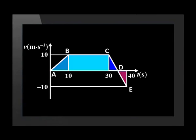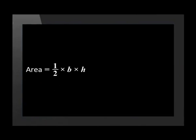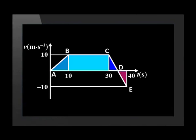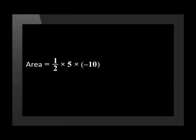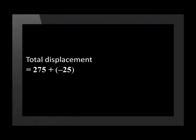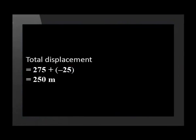Now, finally, we work out the total displacement to E. We again calculate the area between the graph and the x-axis. The area is given by a half base times height. Please note that this time the height is negative, so the area equals a half times 5 times negative 10, which gives us negative 25 meters. The negative velocity means that the car moves in the opposite direction. Therefore, the total displacement equals 275 plus negative 25, which gives us a total displacement of 250 meters.